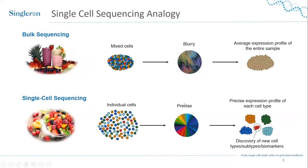Why use single cell sequencing instead of bulk sequencing? A good analogy is comparing a smoothie to a fruit bowl. Even though they contain the same ingredients, it's hard to take them apart and understand everything in the smoothie compared to a fruit bowl. This is what you get from bulk sequencing: the average expression of your tissue and sample without understanding all the cells that make it up.